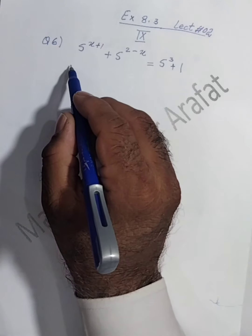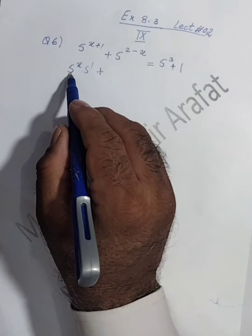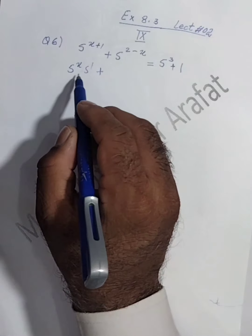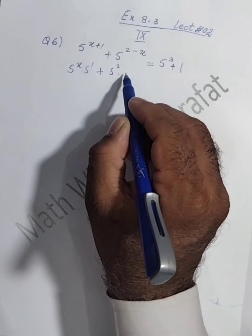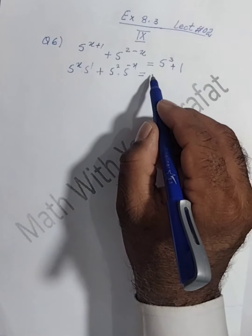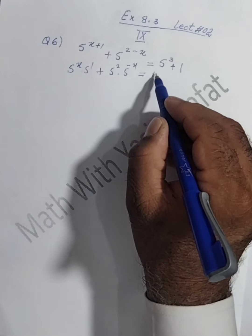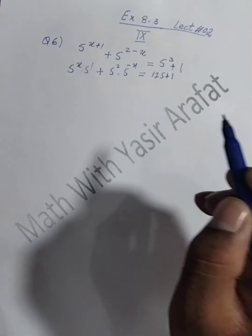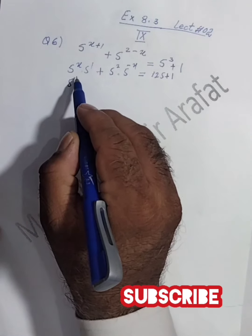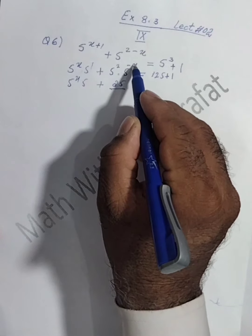This is 5 power (x+1). We can write this as 5 power x into 5 power 1, because when the bases are the same the powers can be summed. So we can break 5^(x+1) like this. And this is 5 power 2 into 5 power (minus x). We can write 5 power 3 — that is 5 × 5 × 5 = 125. So here we have plus x on one side and minus x on the other, and we shift the minus x term across.